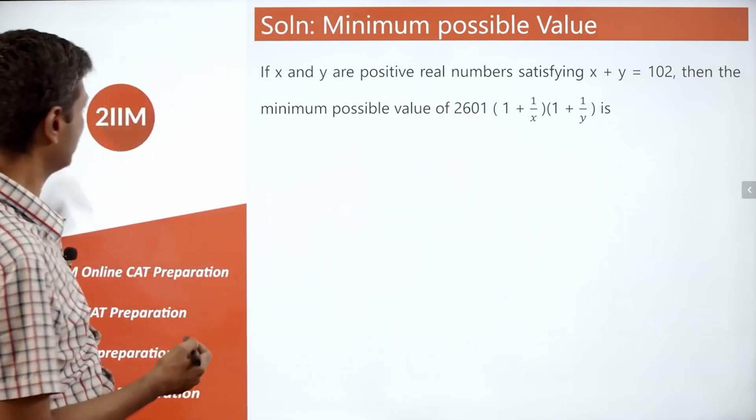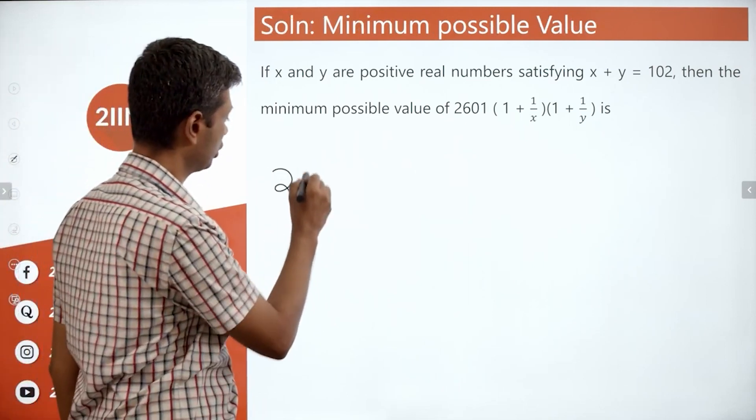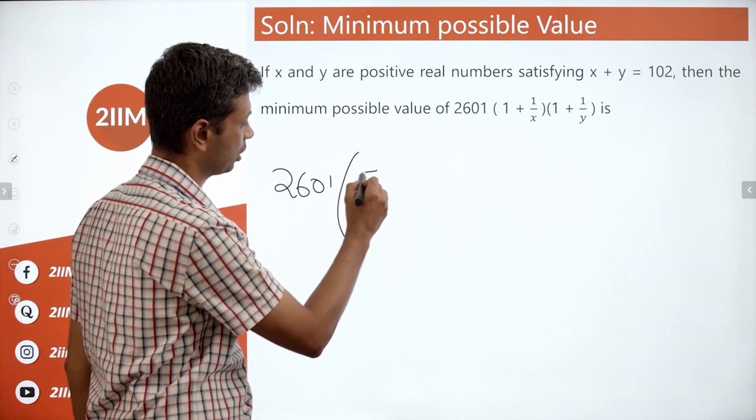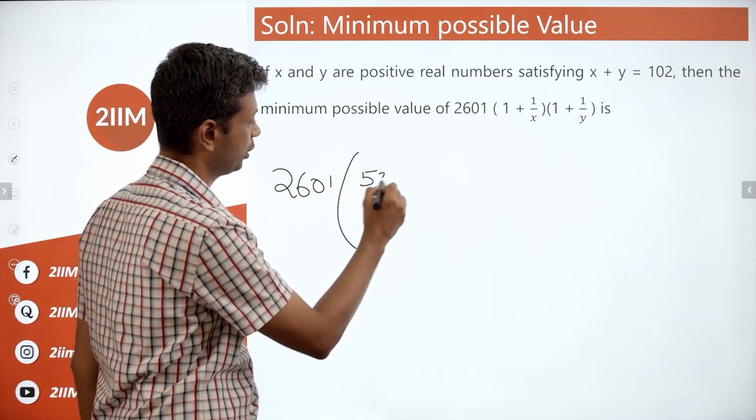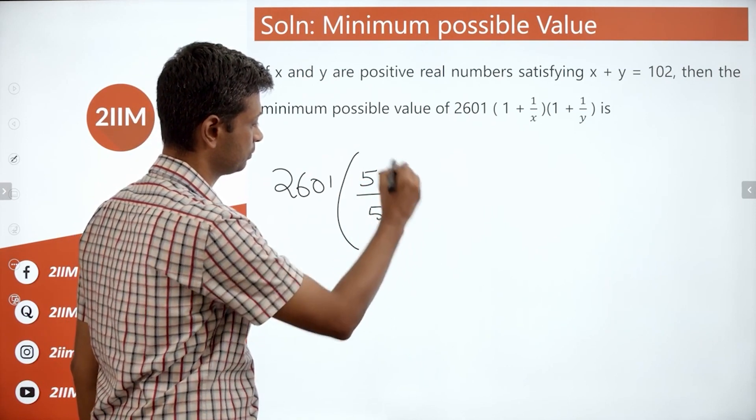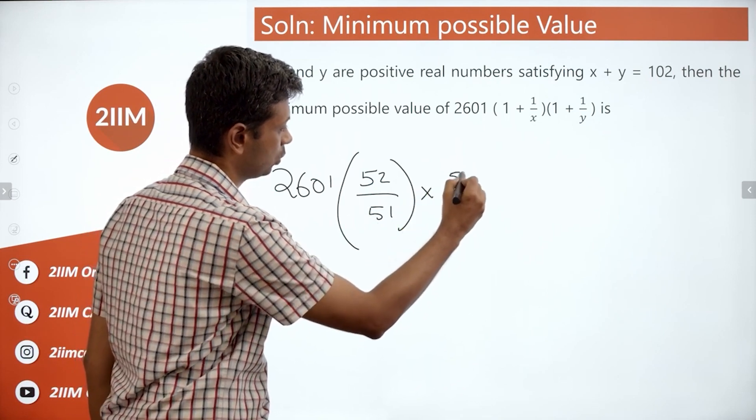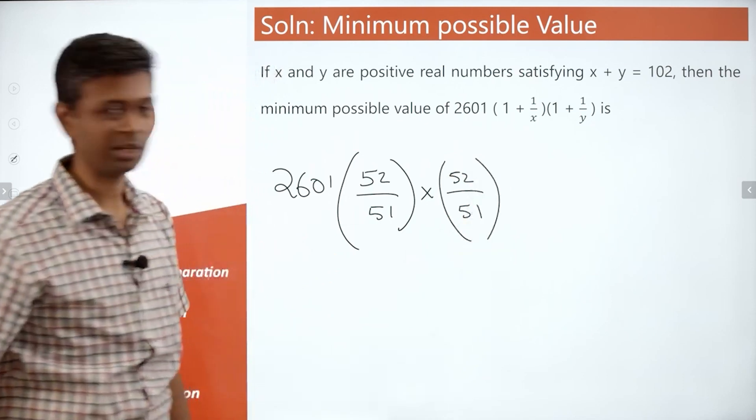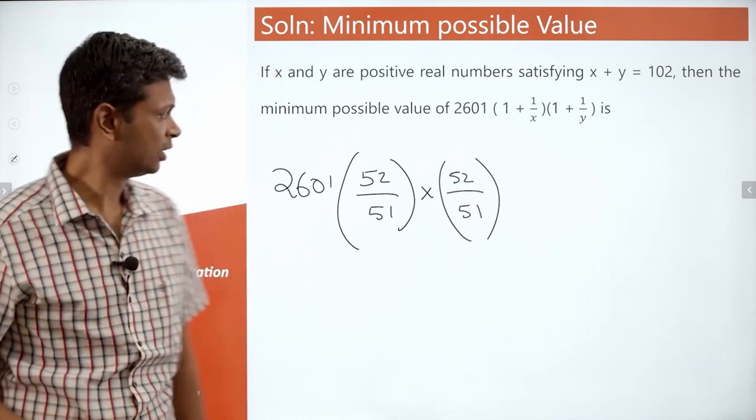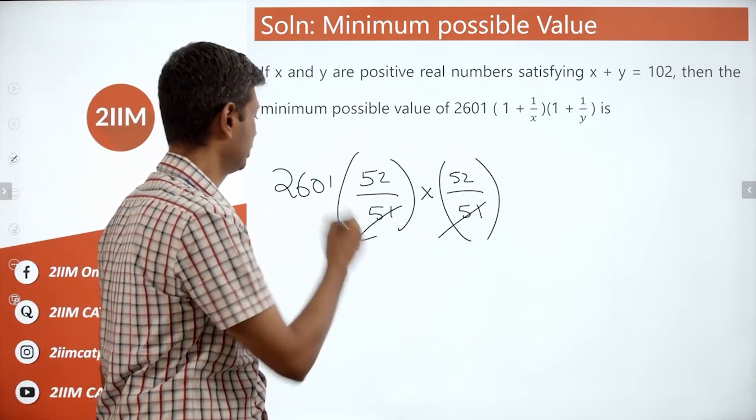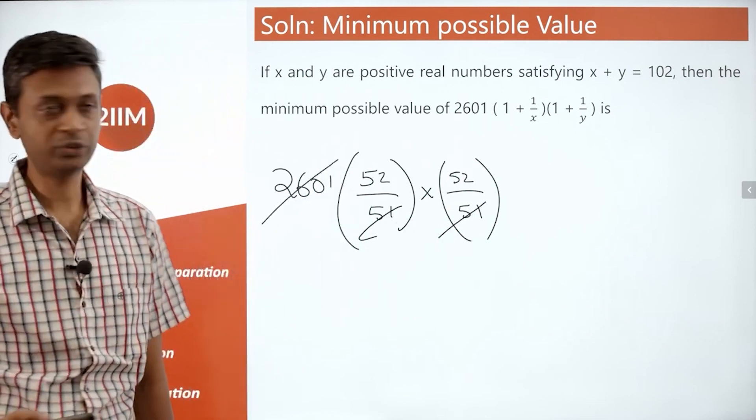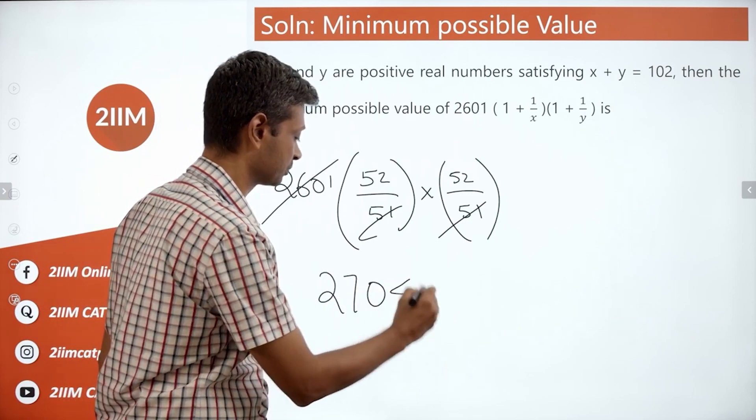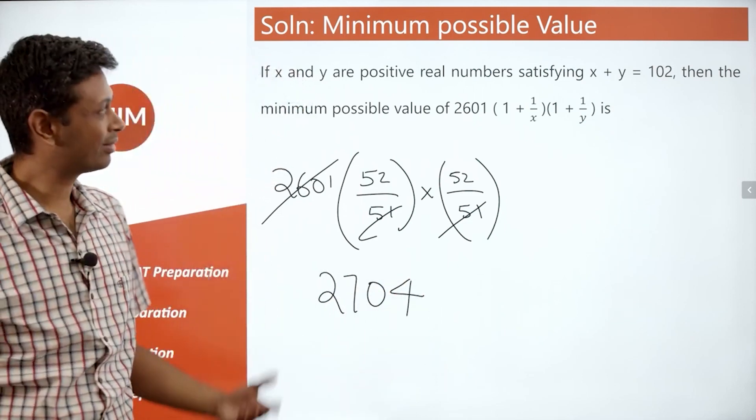We are good to go. What do we do? Let's look at that. Put x is 51. So looking at 2601 into (1 + 1/51) or (52/51). So (52/51) into (52/51). Funnily enough, this is 2601... 52 into 52, you should find that, but I happen to know that it is 2704.